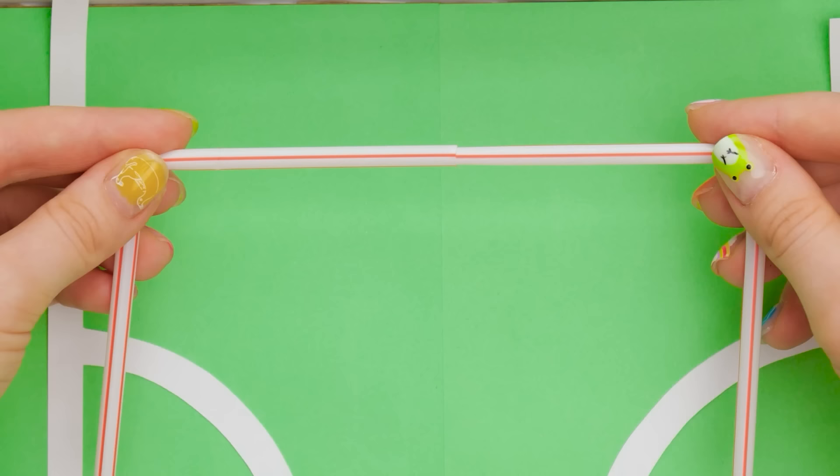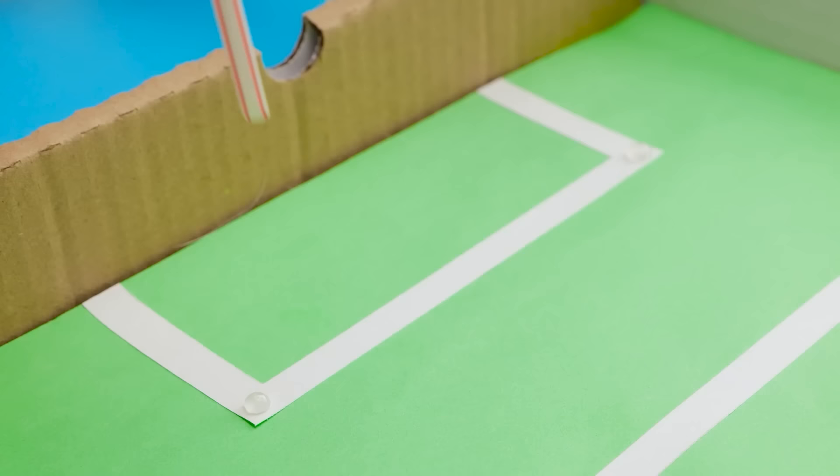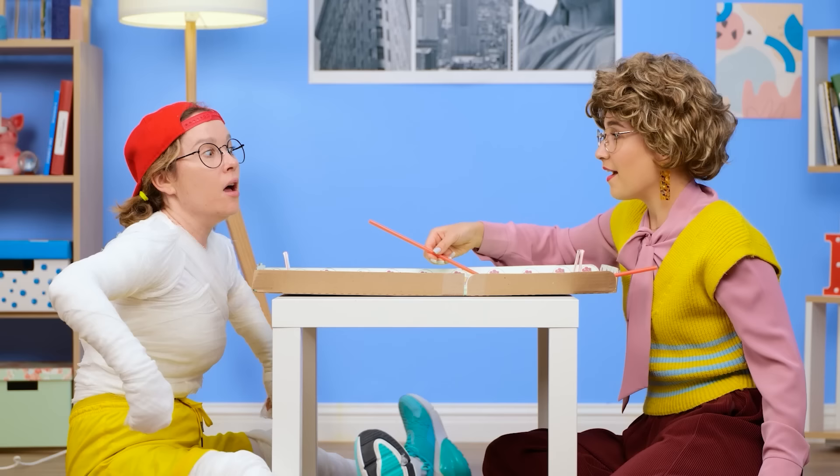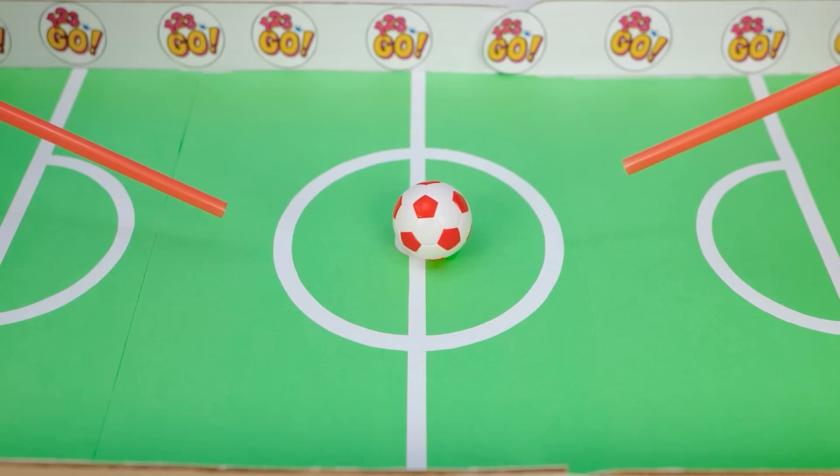Next up, straws! I'll bend them, slide them together, and then put them in place with some glue! Let's add some stadium decorations to make it look fun! This straw's for you, and this one for me! Now blow!